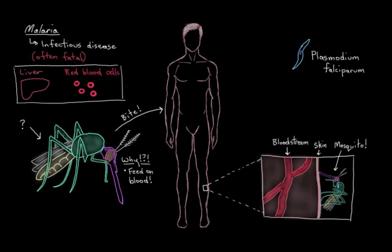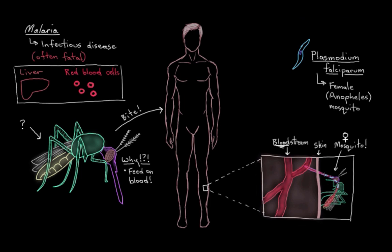Now let's add in some parasites to our mosquito and see what happens when someone gets bitten by an infected mosquito. The Plasmodium parasite is usually transmitted by a female Anopheles mosquito — Anopheles is just a genus — and that's because females feed on blood, while male mosquitoes feed on other things like nectar from flowers and plants. Once she's happily drinking our blood, some of the parasites from within her saliva swim over from inside her mouth to our bloodstream. That's step one of the infection.